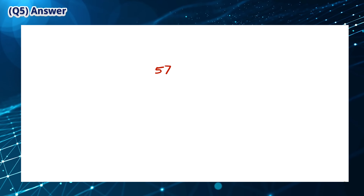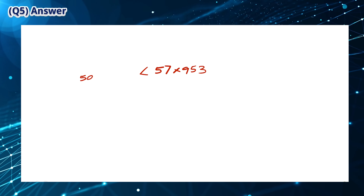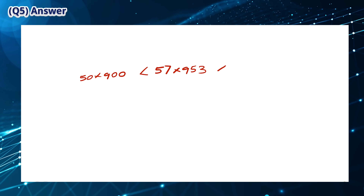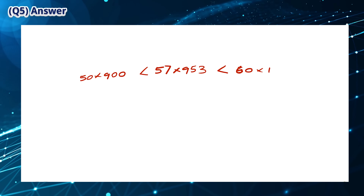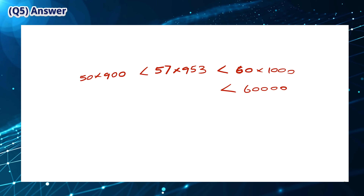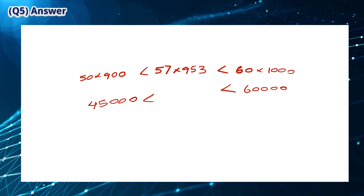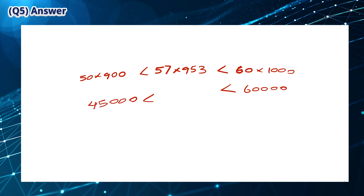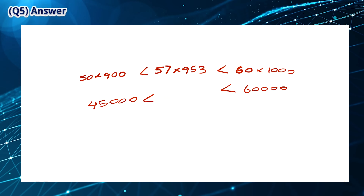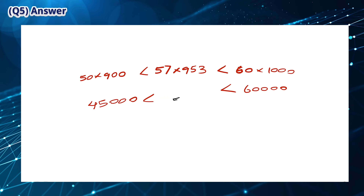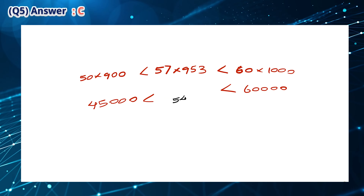57 multiplied by 953 is larger than 50 multiplied by 900 but is smaller than 60 multiplied by 1000. This means that the answer is between 45,000 and 60,000. The only answer that matches these conditions is C.